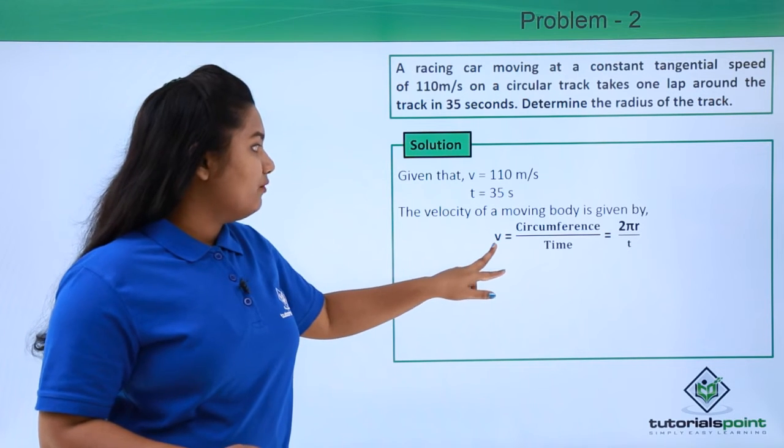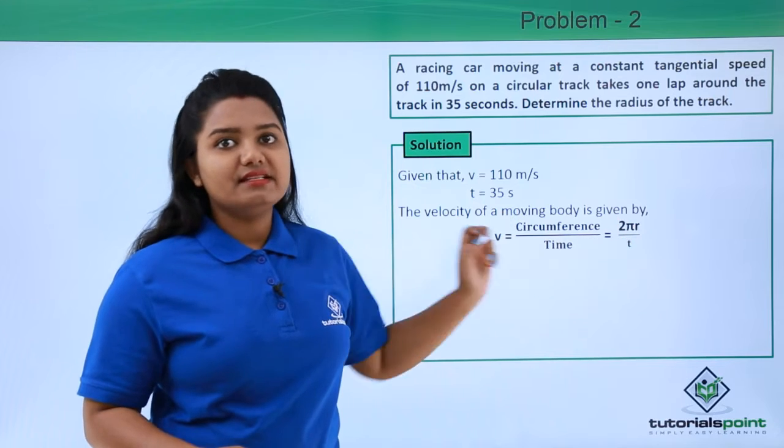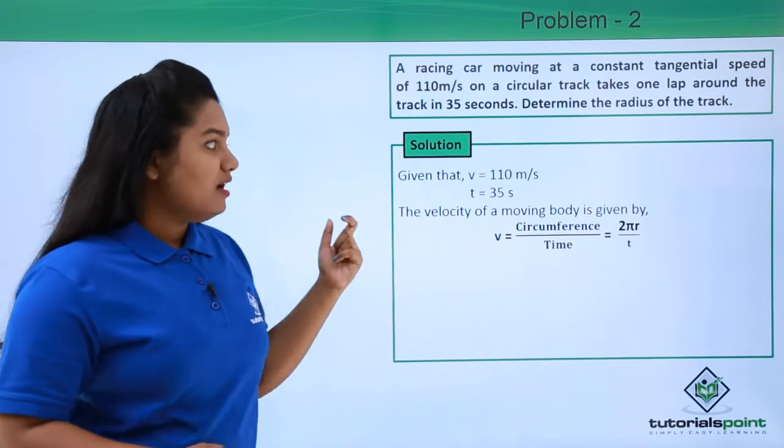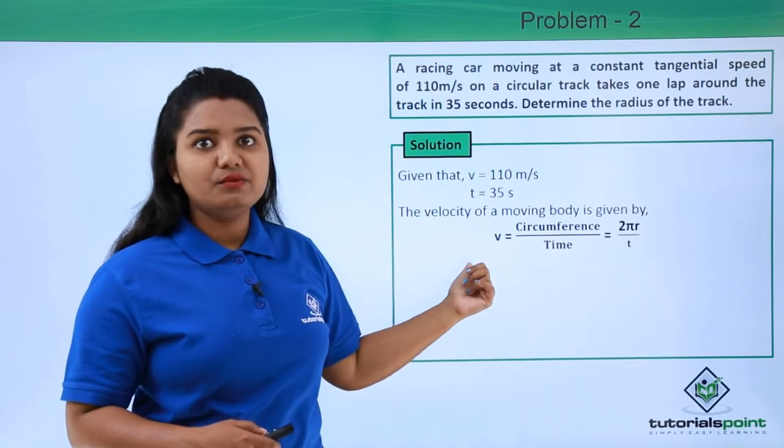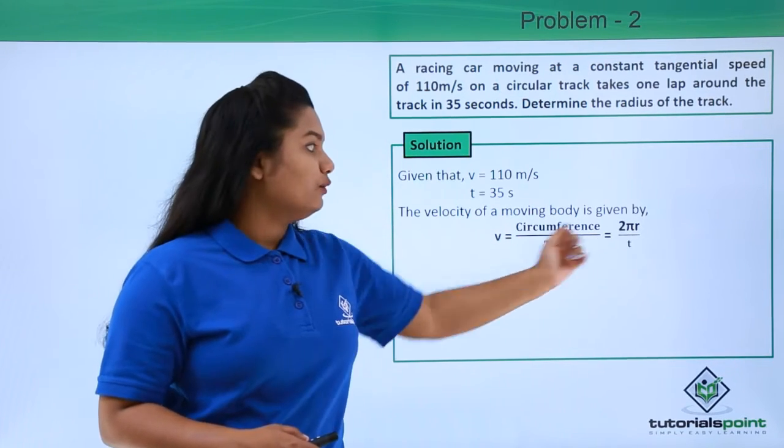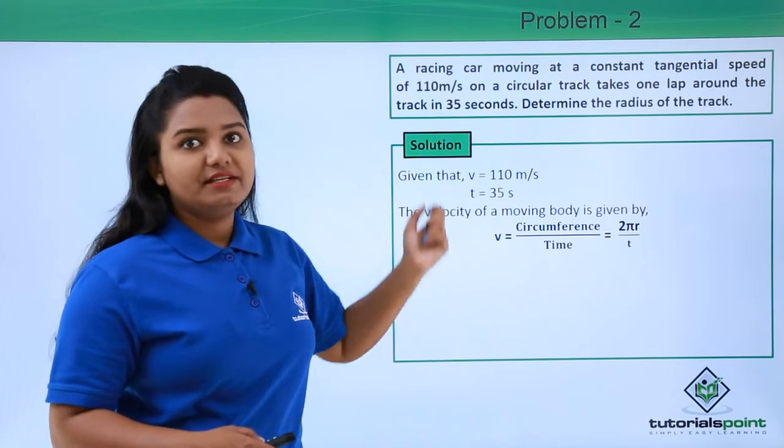We already have what is the velocity. We know the time but we do not know what is the radius of the circular track. And since we do not know only one thing in this whole expression, we can find out the radius, that is the unknown, using the values that we are provided with.